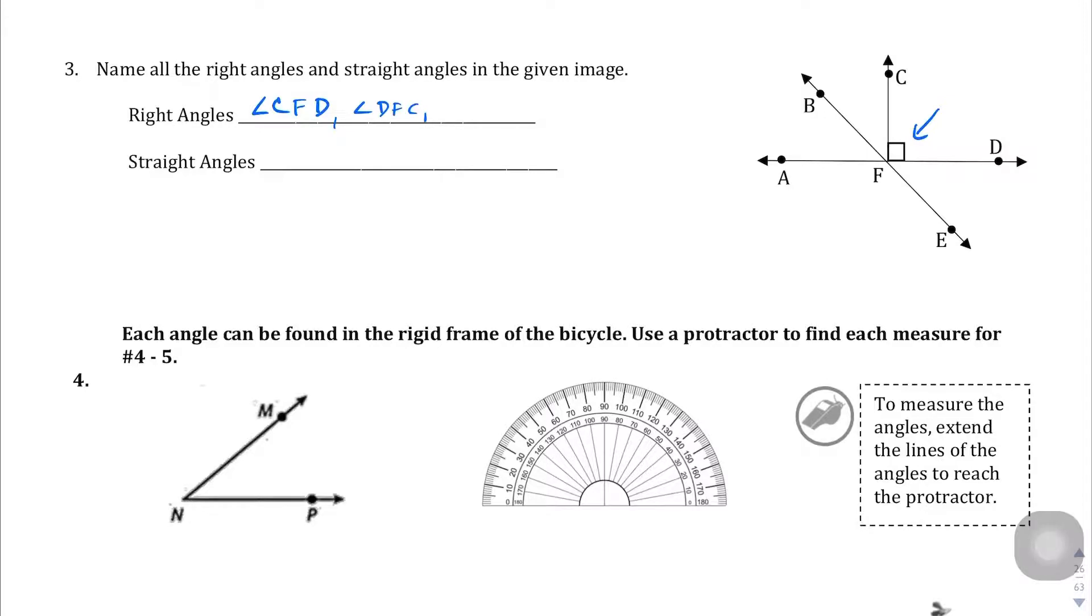Even though it's not drawn on here, we can also assume this side is also a right angle because it's on the same line, the line A, D. We're gonna call it angle A, F, C and angle C, F, A.